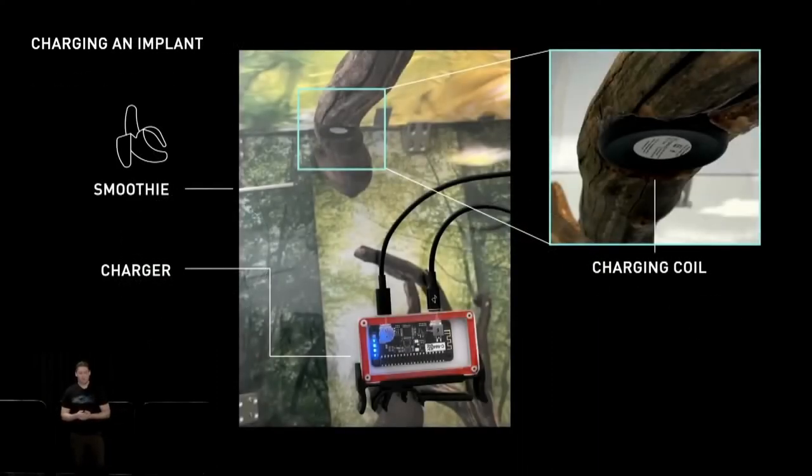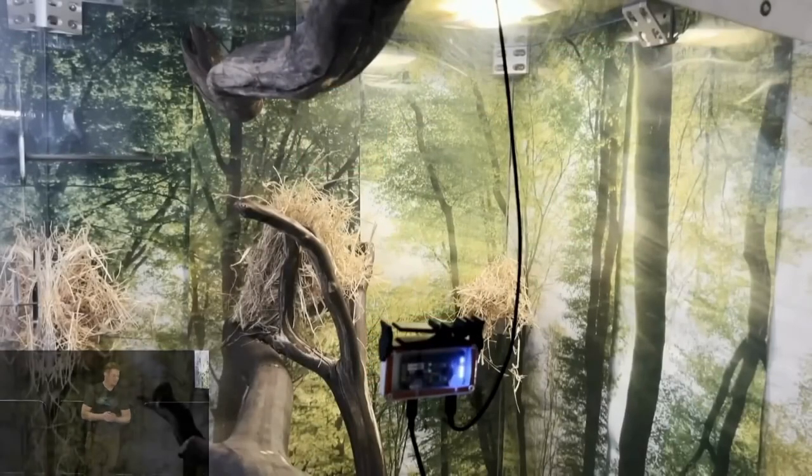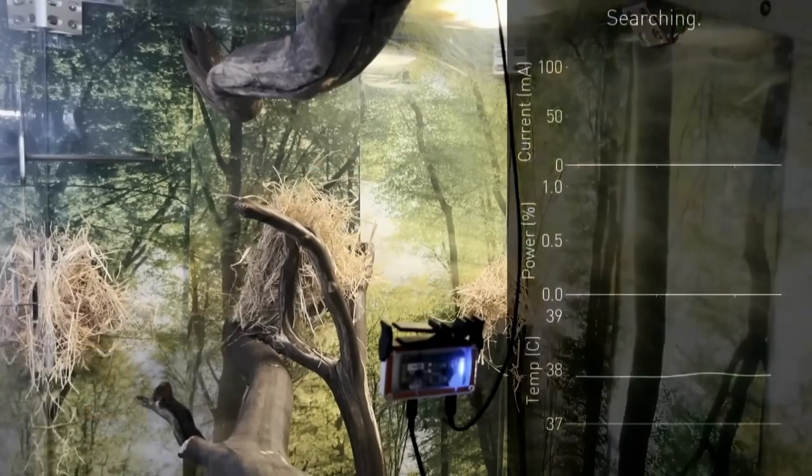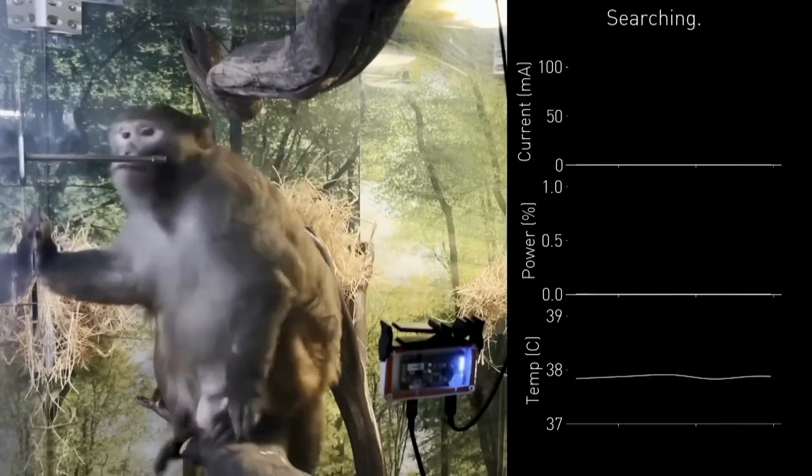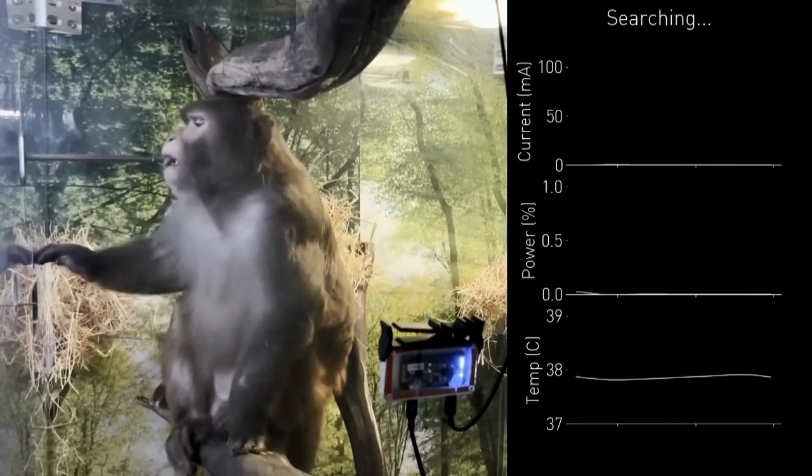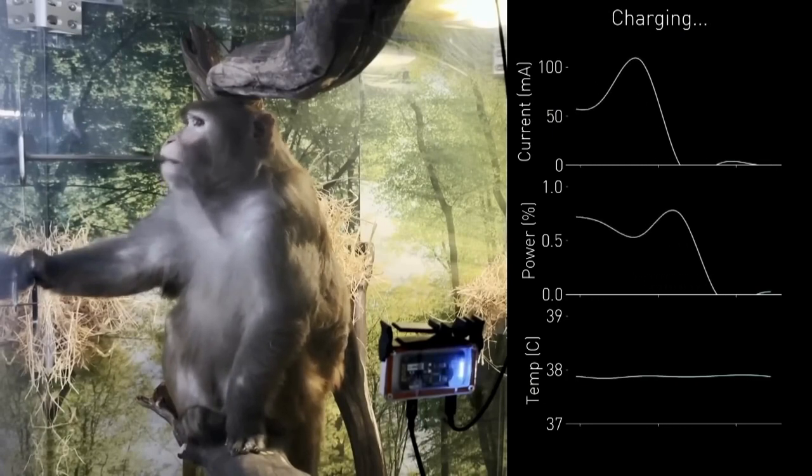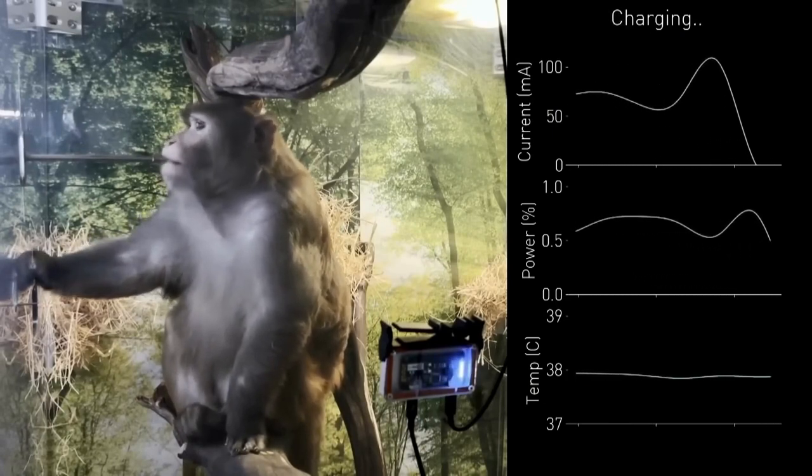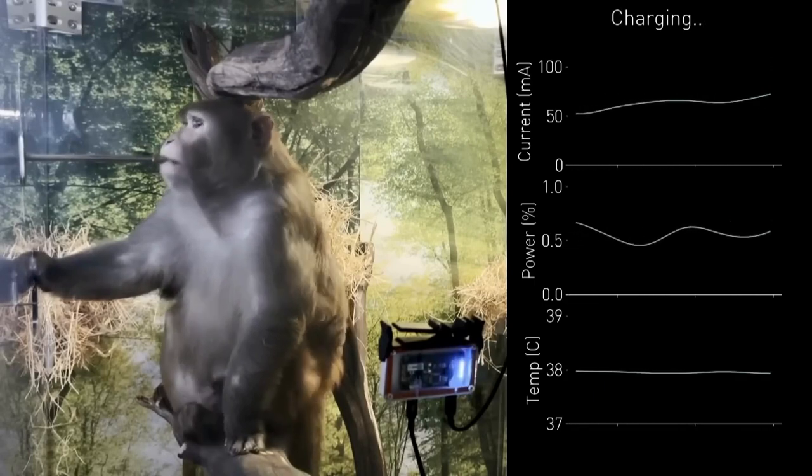With the addition of one new outer control loop plus a banana smoothie pump, the troop has been trained to charge themselves. So let's see how Pager charges his implant. On the right, we're streaming real-time diagnostics from Pager's N1. When he climbs up and sits below the coil, you can see the charger automatically detect his presence and transition from searching to charging. We see the regulated power output on a scale of 0 to 1 and the current driven into his battery.